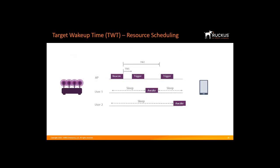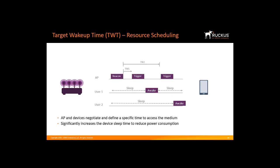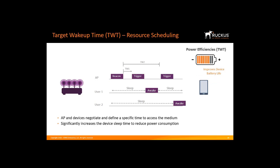Target Wake Time, or TWT, is another concept developed in 802.11ah. It allows devices to negotiate when and how often they will wake up to send or receive data. TWT increases device sleep time and, in turn, substantially improves battery life, a feature that is particularly important in IoT devices. This allows the Wi-Fi transponder to sleep when transmission isn't necessary, which should help to preserve precious battery life once 11ax devices are available. In addition to saving power on the client device side, Target Wake Time enables wireless access points and devices to negotiate and define specific times to access the medium, helping optimize spectral efficiency by reducing contention and overlap between users.